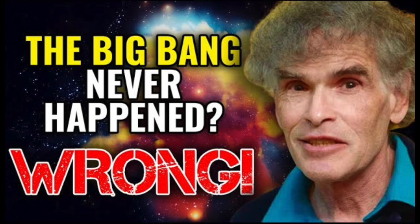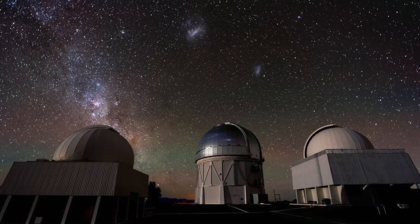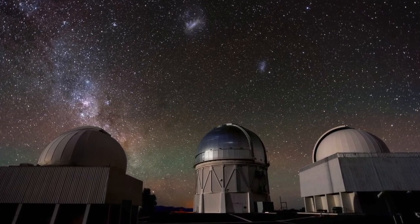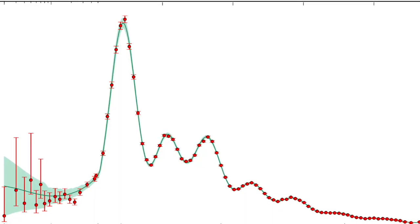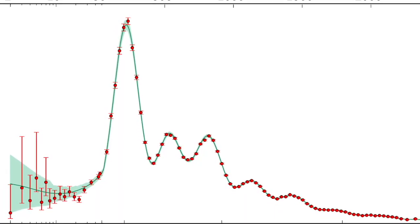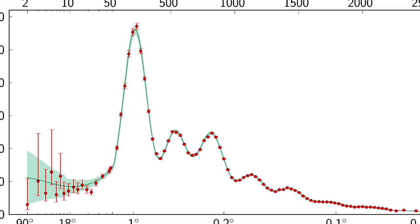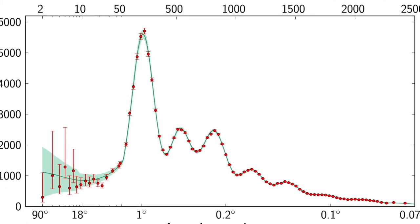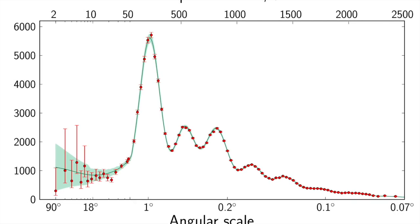But when we account for these factors, using observations that have nothing at all to do with the CMB, values coming from independent methods, we are able to accurately predict the exact pattern of the power spectrum. This one chart shows beyond any reasonable doubt that the Big Bang happened. It is simply necessitated by the facts of this data. The Big Bang was used to predict this pattern precisely, and it is required to explain it.